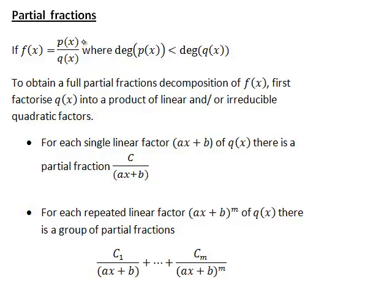So for instance f(x) could be a quadratic function over a cubic function, but not the other way around. And if you ever want to obtain partial fractions for an improper rational function, where the degree of the numerator is greater than or equal to the degree of the denominator, you would first need to do long division to get a polynomial plus a proper rational function. In this case though we will focus on examples where it is already in the form of a proper rational function.